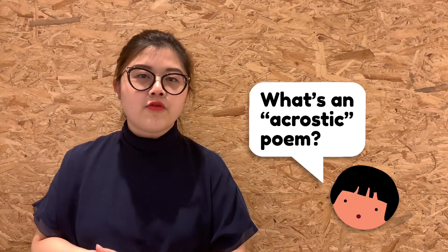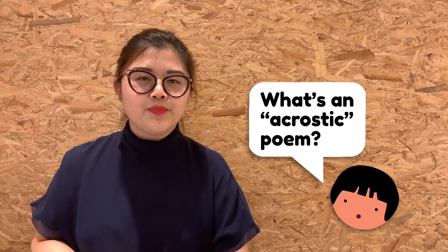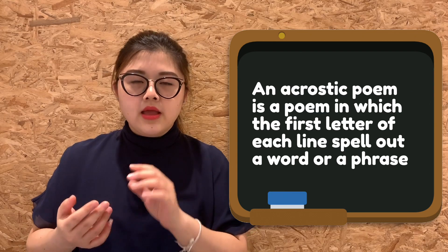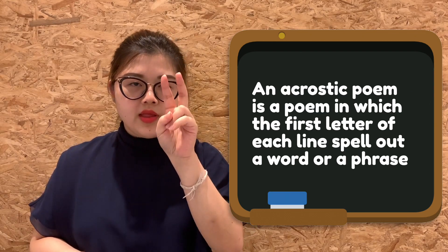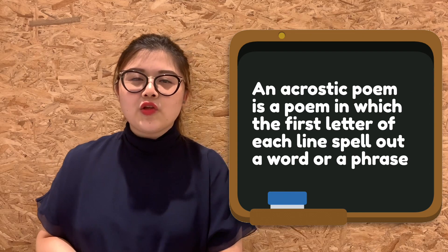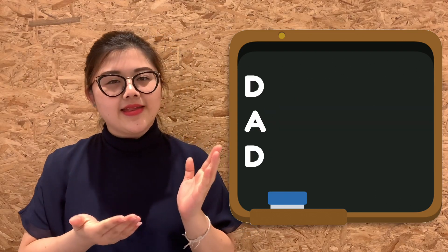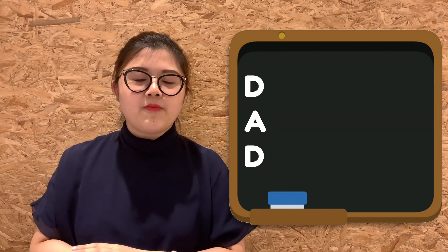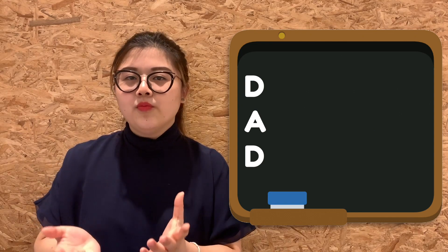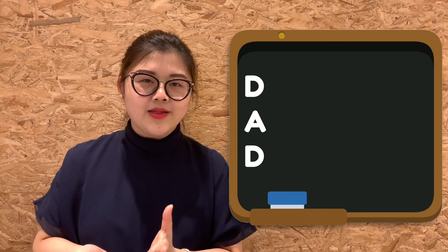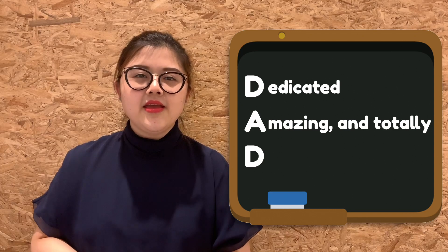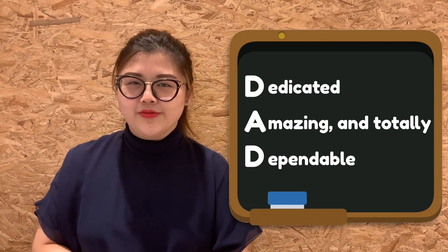Have you heard about acrostic poems? Well, they are simply poems that spell out a word using the first letter of each line of the poem. So in this short example here, the poem would spell out the word 'dad,' and the poem would sound like this: Dedicated, amazing, and totally dependable.